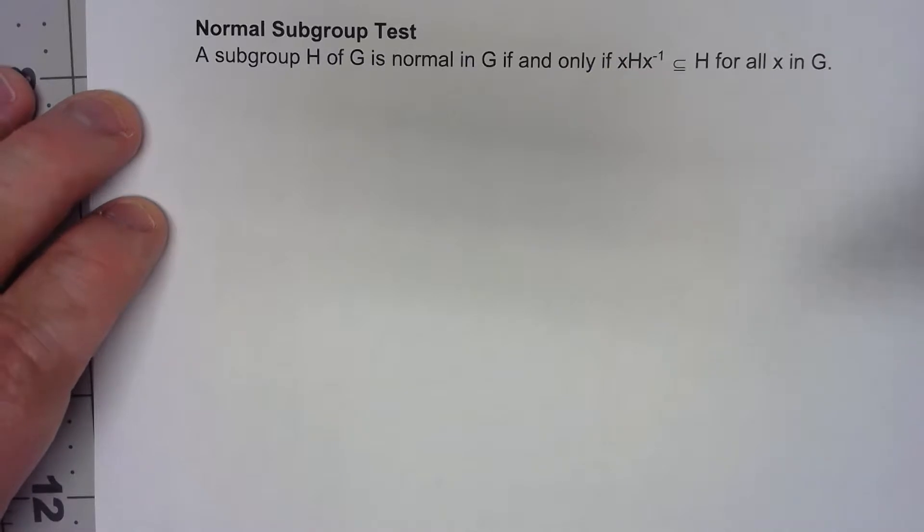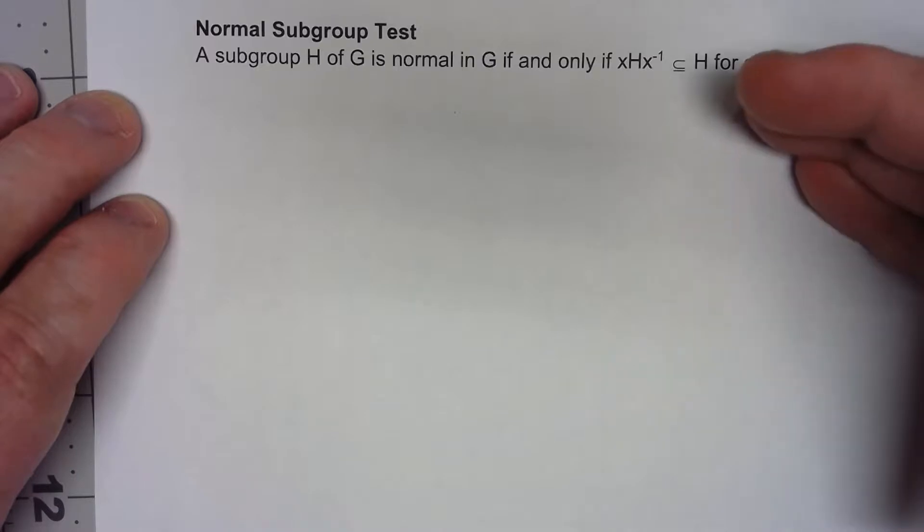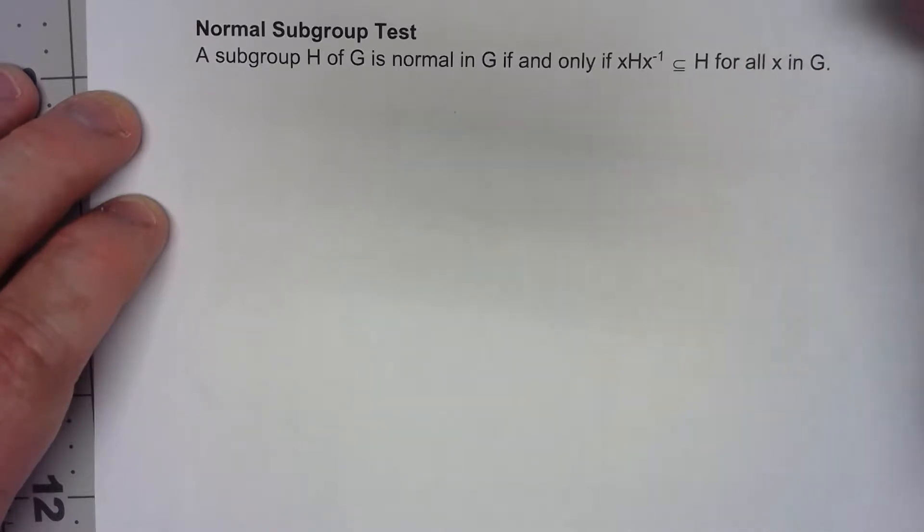In the last video we talked about what it meant to be a normal subgroup. Now we're going to look at what is in general a better way of figuring out whether a subgroup is normal. The problem with the base definition is that you need to check every single element of G, compute the left coset and the right coset and see if they're equal.